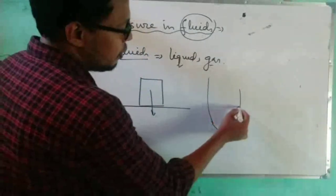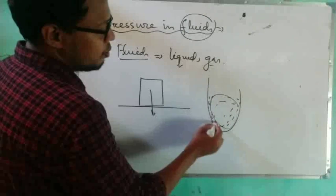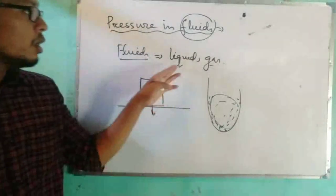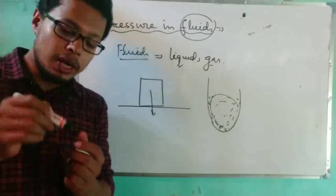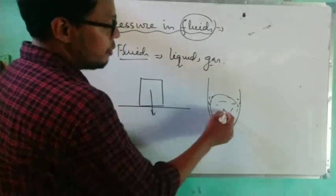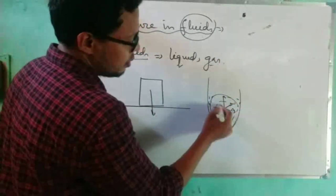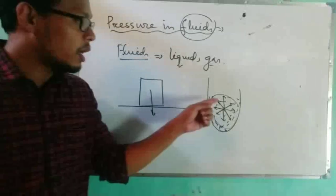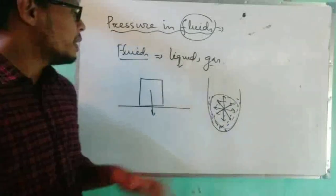But if we pour water or any liquid, it gives pressure in all directions. When a fluid is kept in a container, it exerts pressure in all directions. A molecule at any point gives force in all directions — on the walls, downward, and sideways. This is the difference between pressure exerted by a solid and by a liquid.